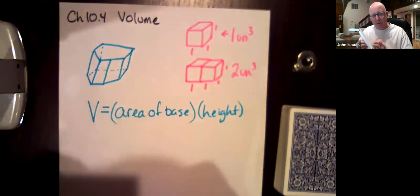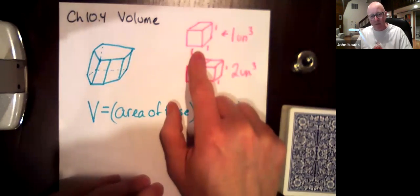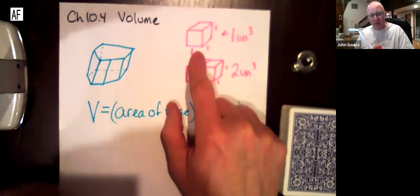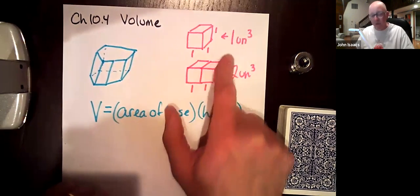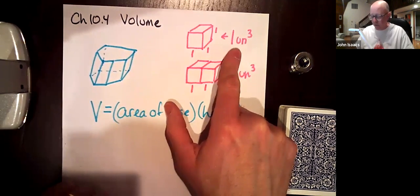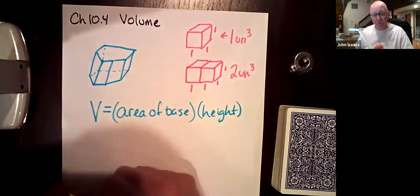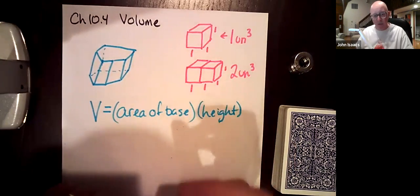But I want to talk about kind of what volume is. If we have some cube that is one by one by one, that is one unit cubed. That's our measurement of volume, one cubic unit.